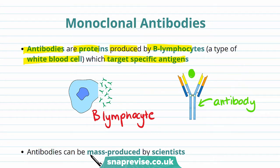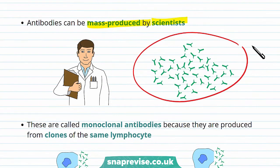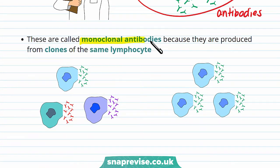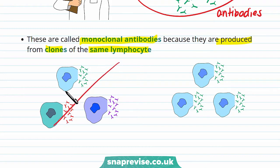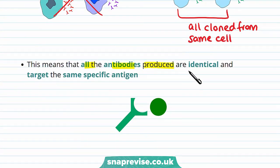Antibodies can also be mass produced by scientists, so a large amount of these antibodies can be produced. These antibodies produced are called monoclonal antibodies because they're produced from clones from the same lymphocyte. So for monoclonal antibodies we use lymphocytes all cloned from the same cell, meaning all of the antibodies produced are identical and they target the same specific antigen.